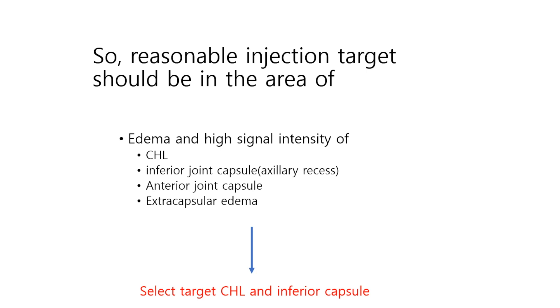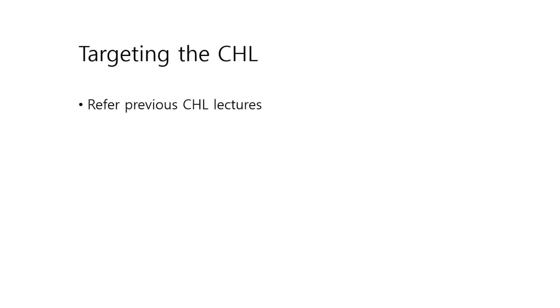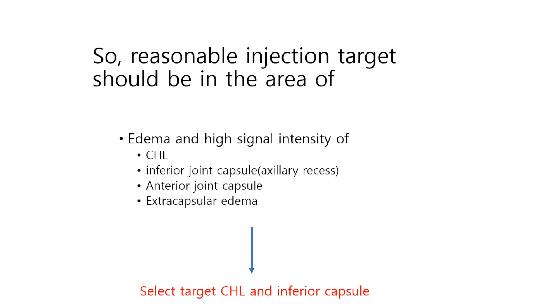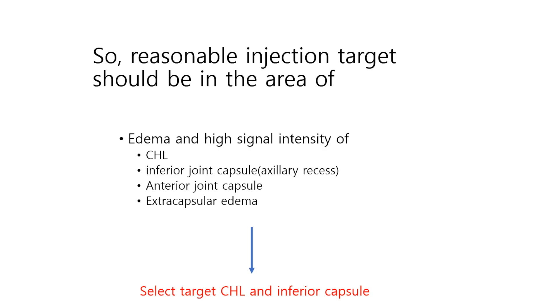When there is edema and inflammation of a particular structure, pain interventionists use steroids in the specific target area. So it is reasonable to select a target for the affected area — choosing the coracohumeral ligament and inferior capsule as targets.